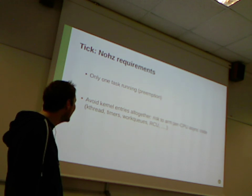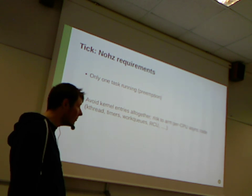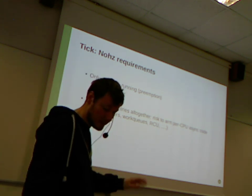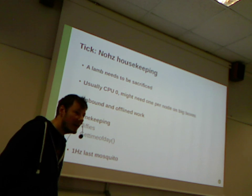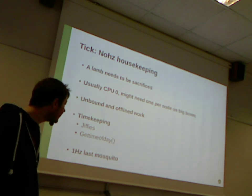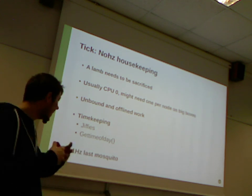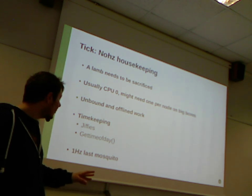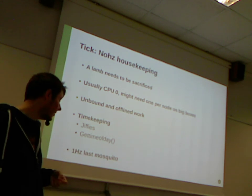About nohz_full requirements: also avoid kernel entries altogether, if you don't want to risk arming any asynchronous kernel code such as workqueues, timers, kthreads, and all the things discussed earlier. When I mention 'a lump to sacrifice,' it refers to one CPU you need to keep out of the nohz_full set. You need a housekeeping CPU to handle all unbound work such as unbound kernel threads, unbound timers, and workqueues, as well as to handle timekeeping and keep time progressing.